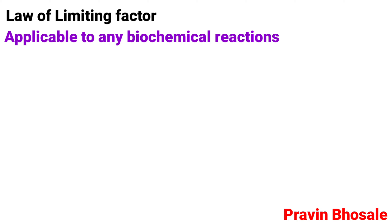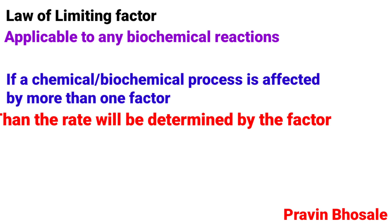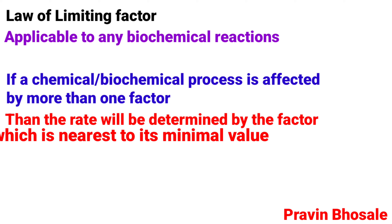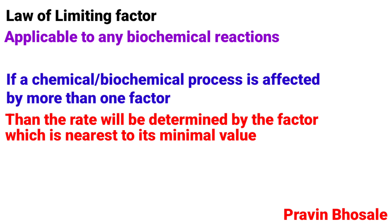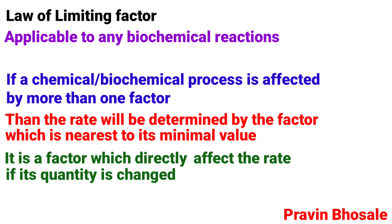This law of limiting factor is applicable to any biochemical reaction. It states that if a chemical or biochemical process is affected by more than one factor, then the rate will be determined by the factor which is nearest to its minimal value — that is, the factor which directly affects the rate if its quantity is changed.